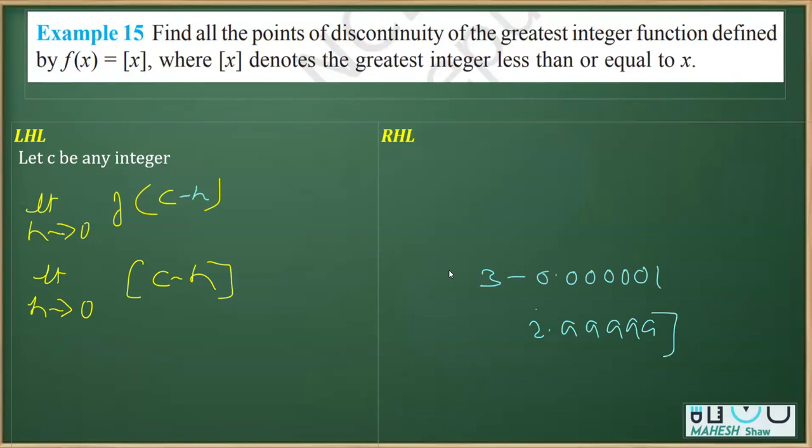That means whatever the integer is, it will be 1 less than that. So we can say that [c - h] has a greatest integer value of c - 1. For example, if I plug in c as 3, we get the greatest integer as 2.